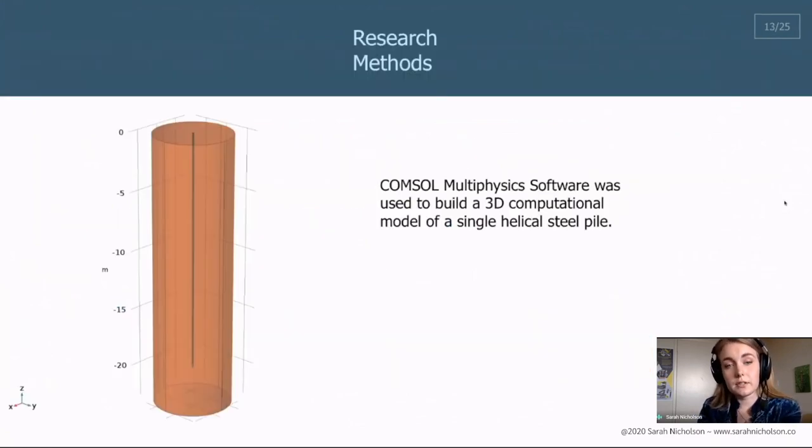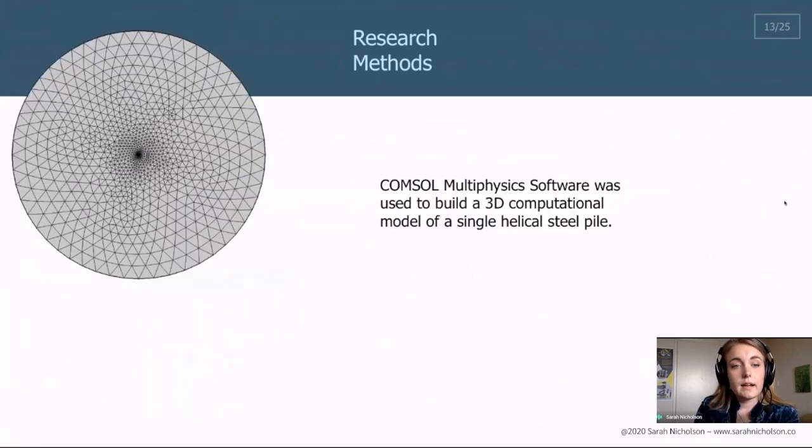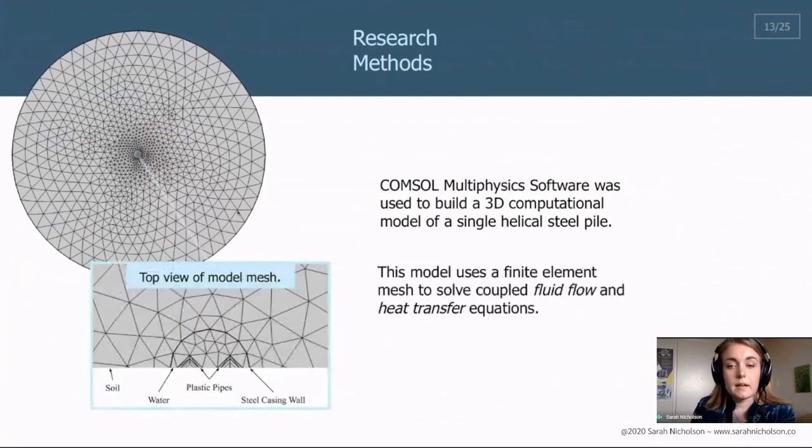To perform this research I used COMSOL software which allowed me to build a 3D computational model of a single helical pile. This software uses finite element analysis. Here's a top view of the model in order to solve fluid flow and heat transfer equations coupled at each intersection of the elements. In this way I can solve for the heat transfer and fluid flow across all of my domains. So I have a domain of soil, fluid, plastic pipes and a steel casing wall.